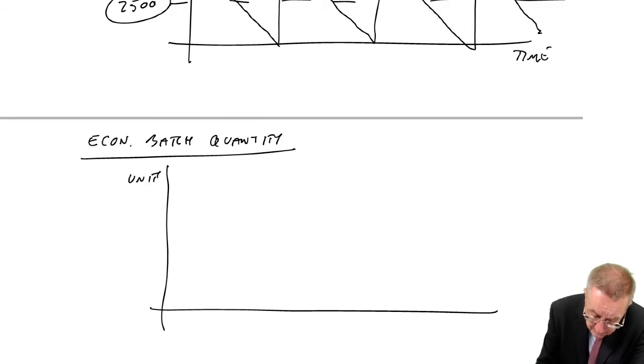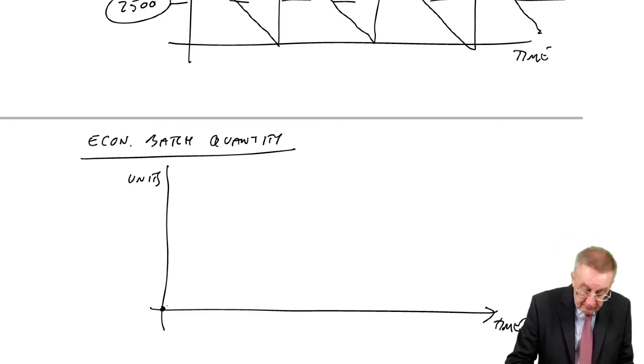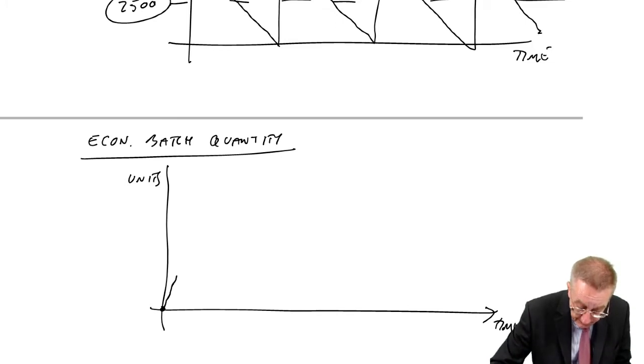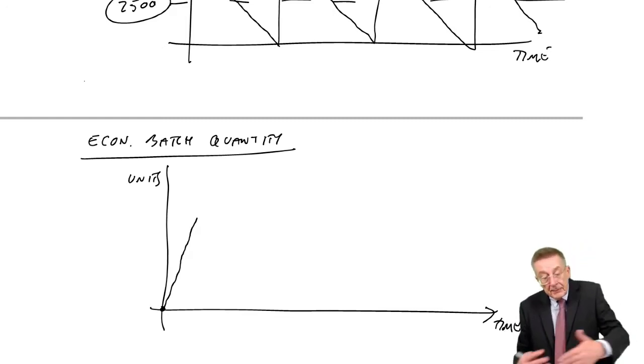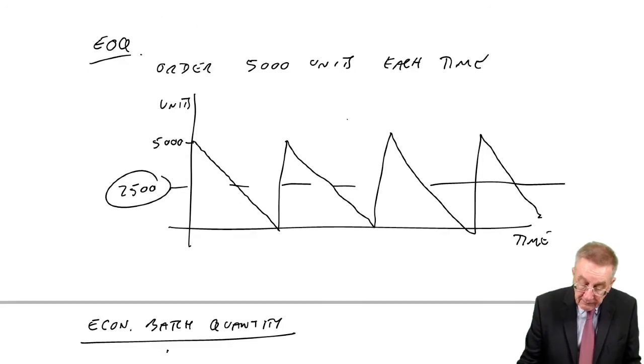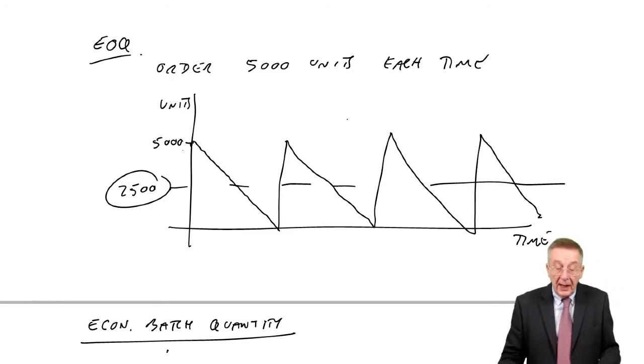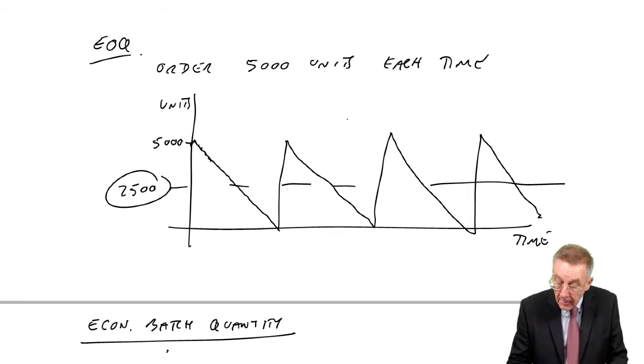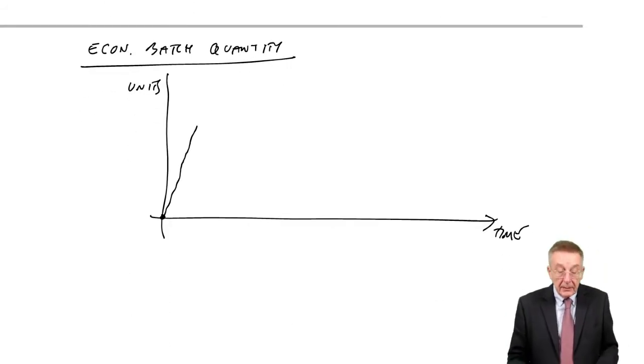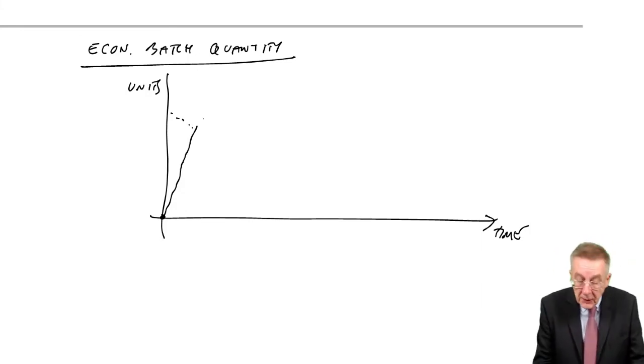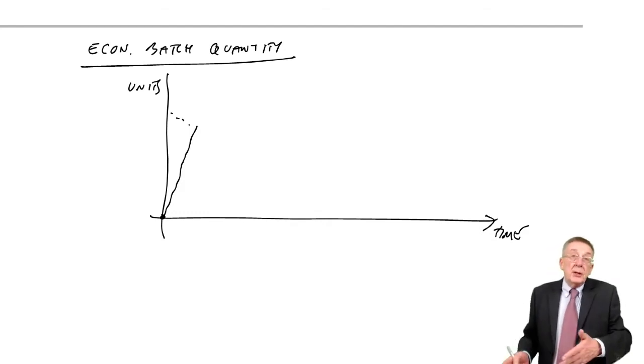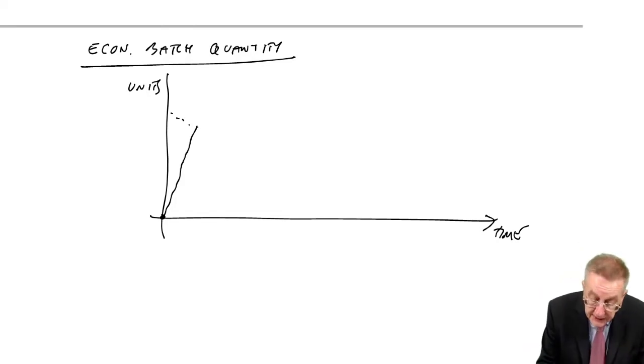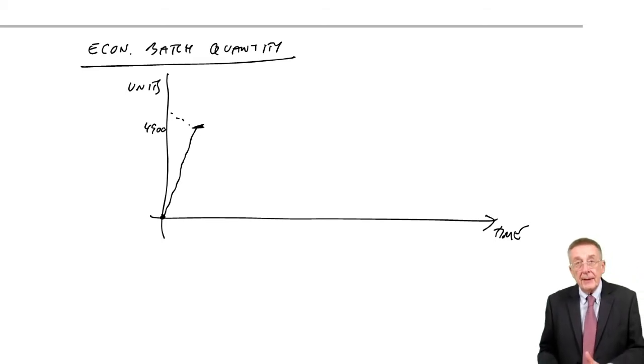And so what's going to happen is this. Maybe on day one, I order 5,000. But they take a few days to arrive. But during those few days, they're coming in to me. But I am supplying some to the customers. Customers are buying until the level keeps going down. And so in the two or three days it takes the factory to supply them, customers have been buying. And so it never actually hits 5,000.